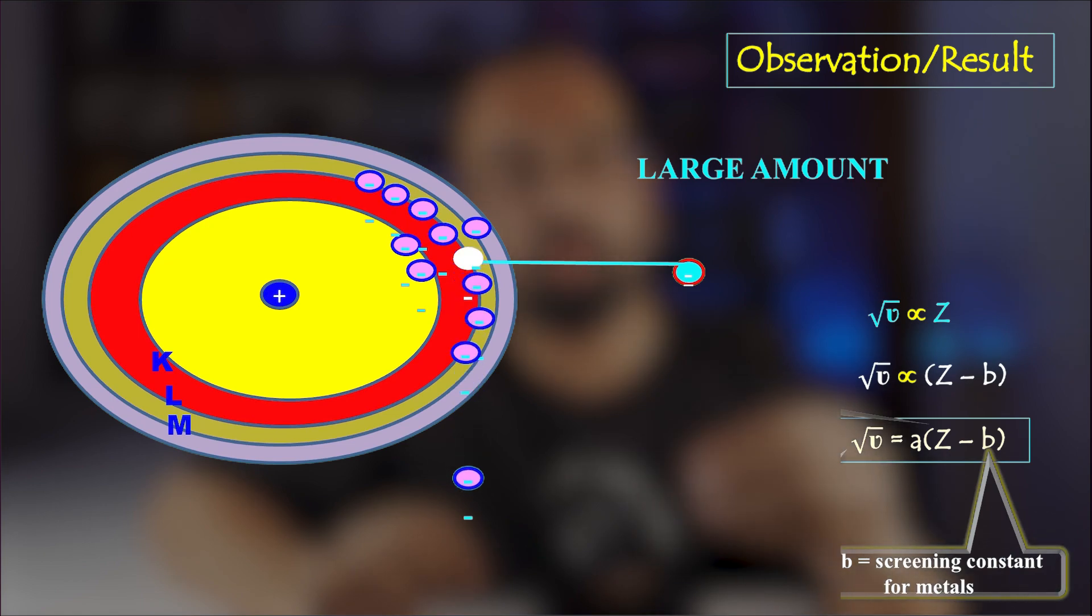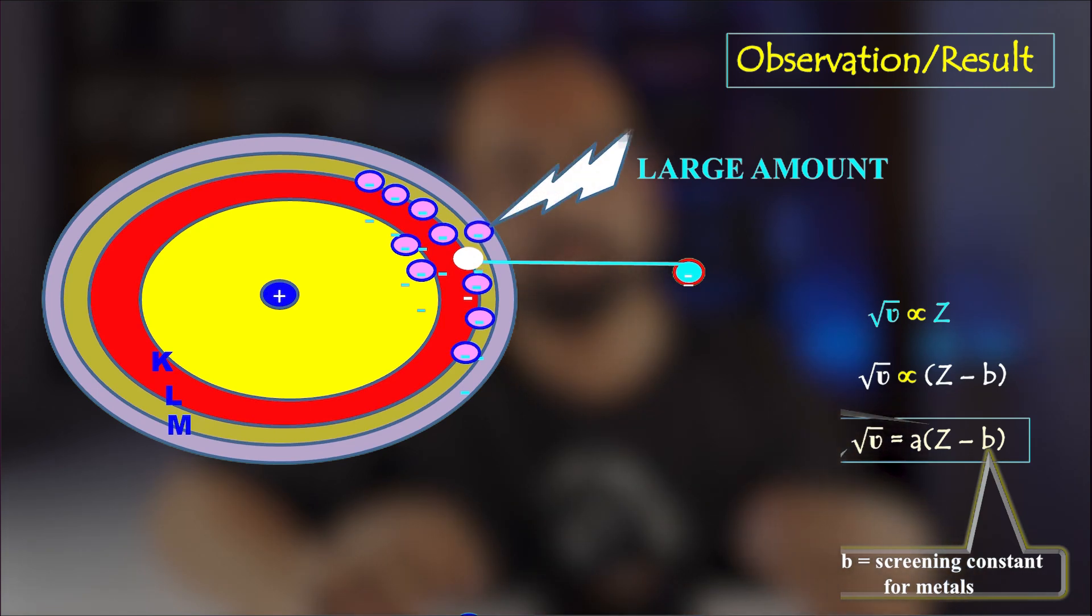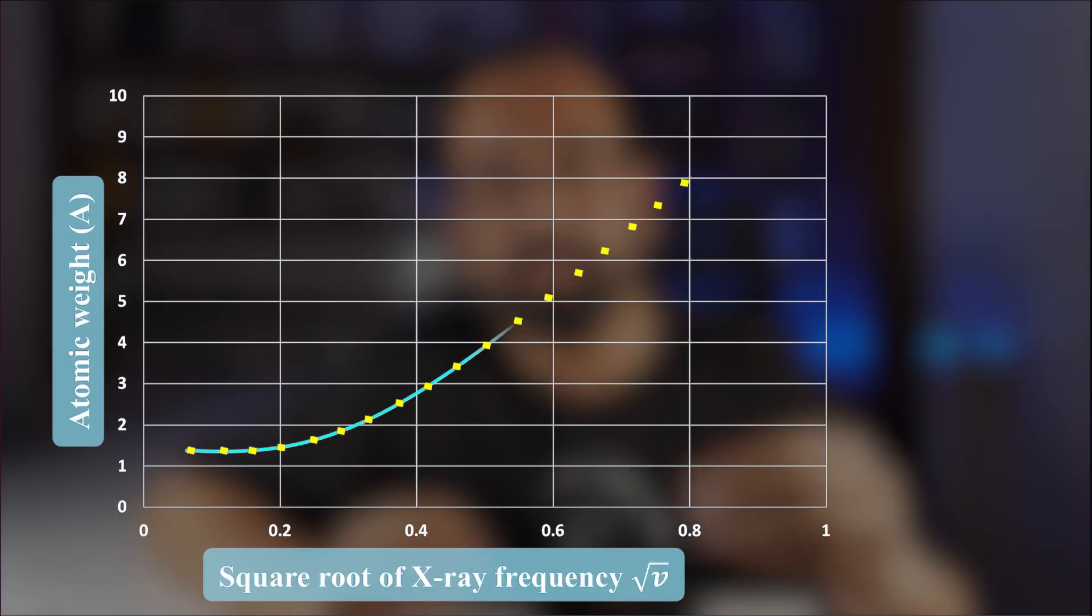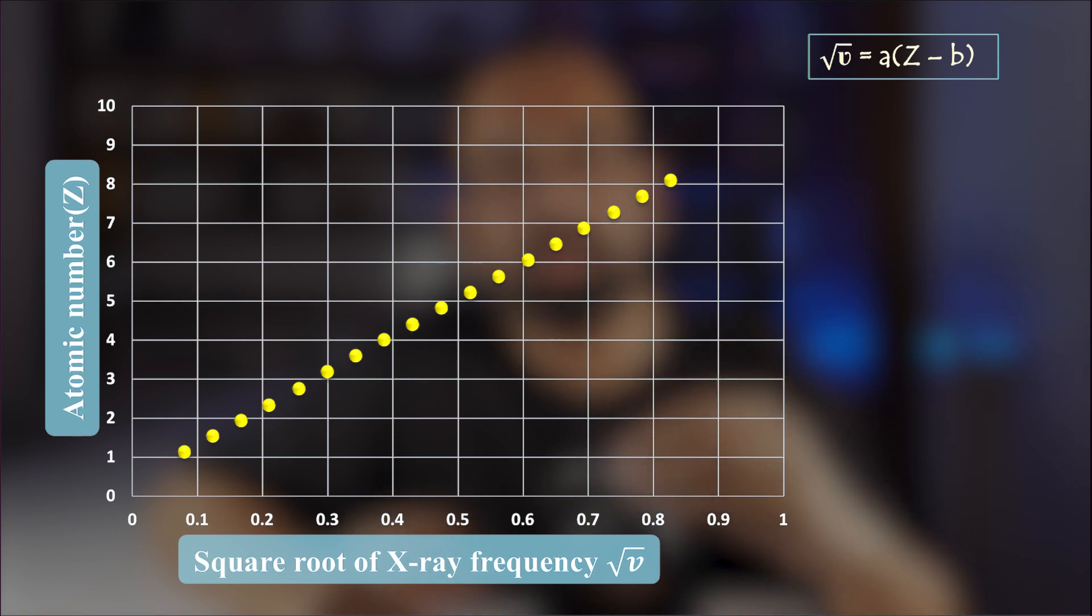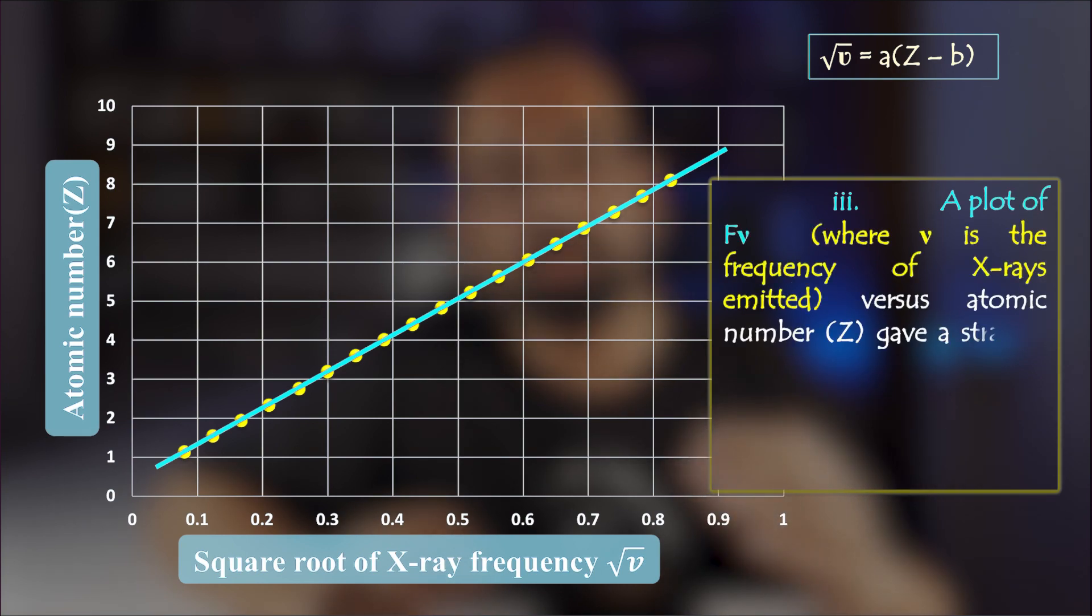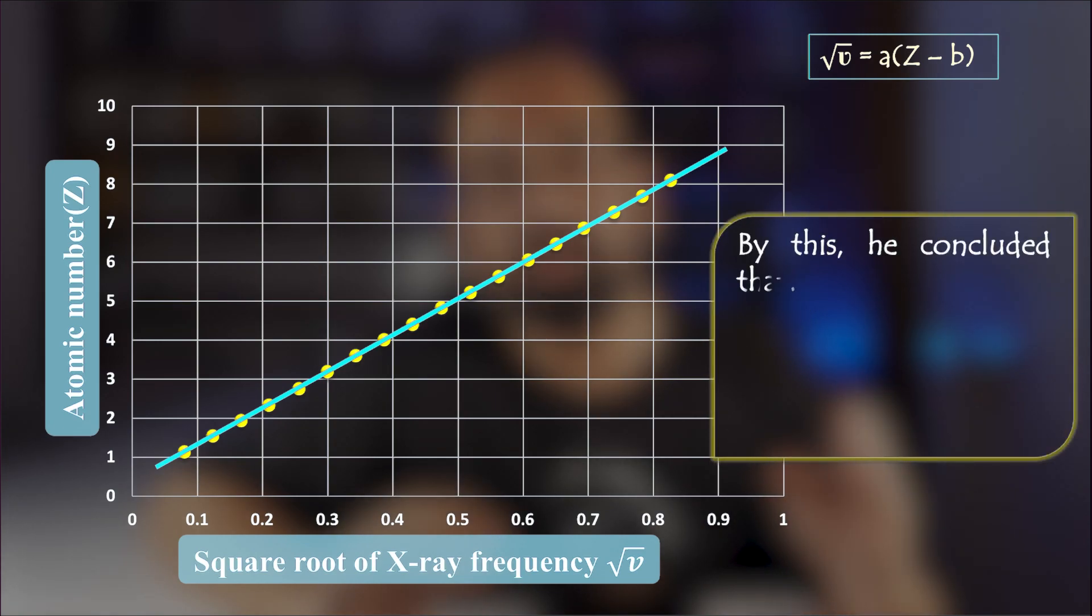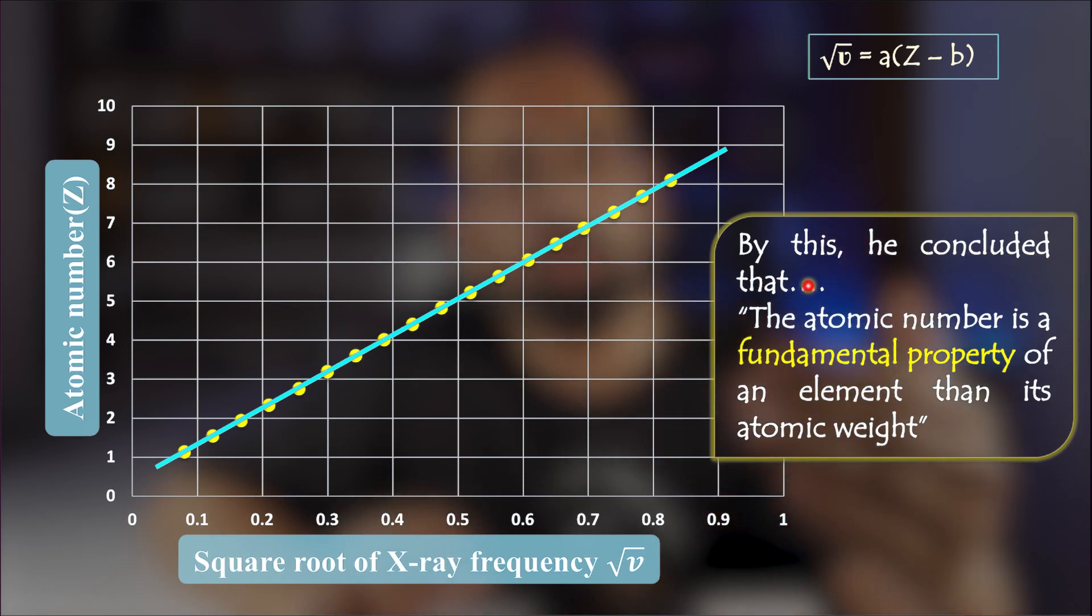A graph can be drawn between the atomic number of the target material and the frequency of the X-rays, resulting in a straight line when studying the K series of X-rays. A graph plot of frequency versus atomic mass gave a curve which is unsymmetrical. A graph plot of frequency versus atomic number gave a straight line which is symmetrical. Hence, Mendeleev's periodic law was modified. By this, he concluded that the atomic number is a fundamental property of an element than its atomic weight.